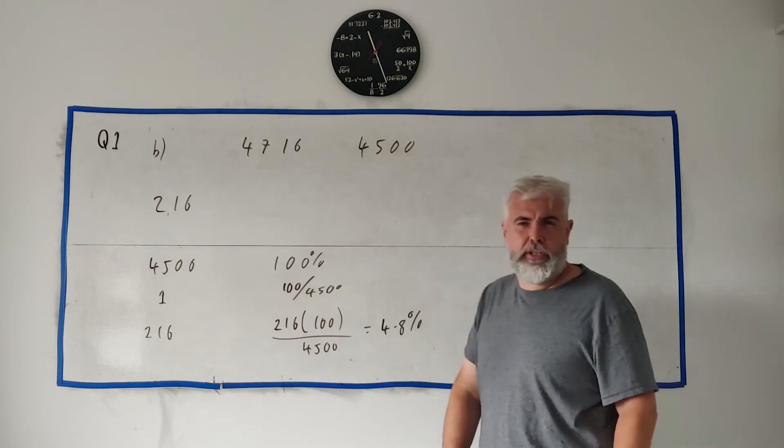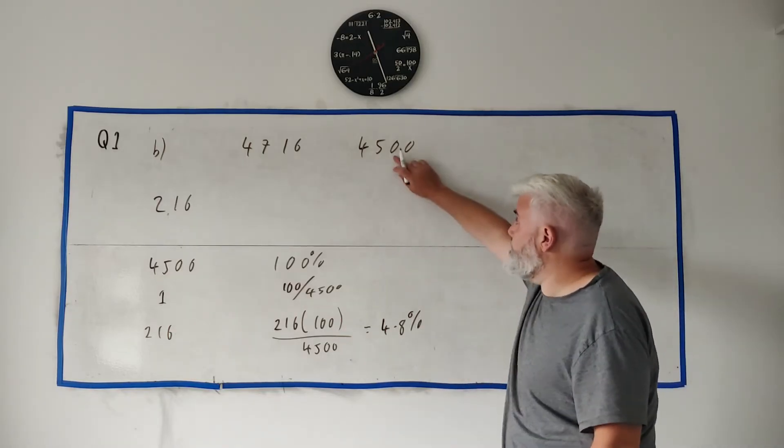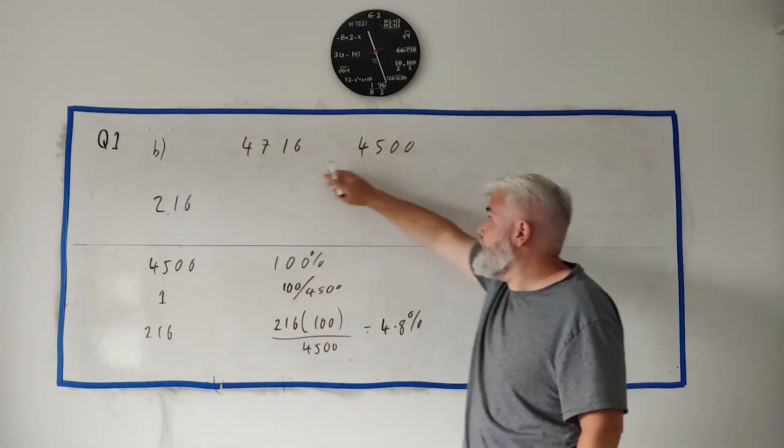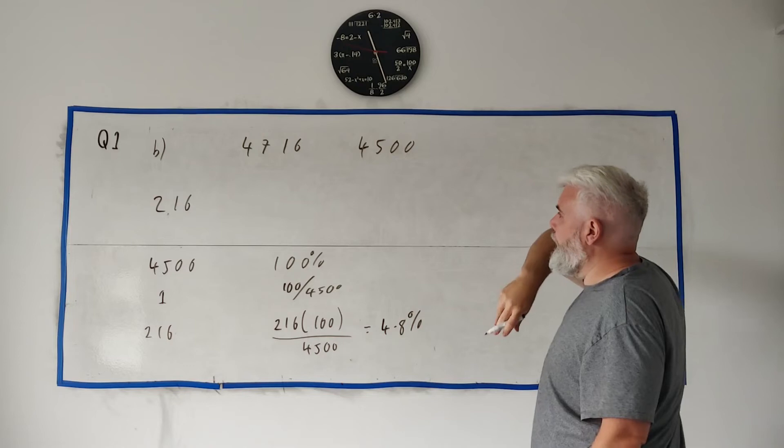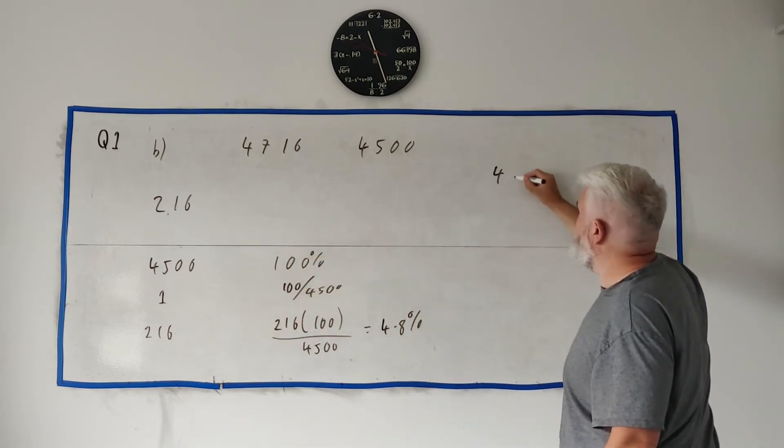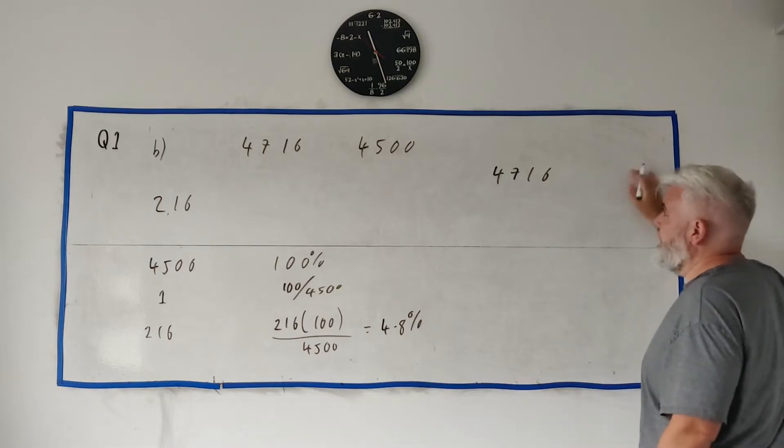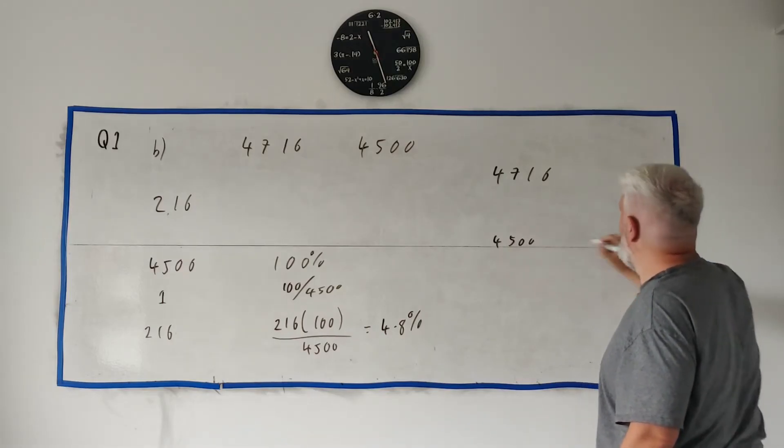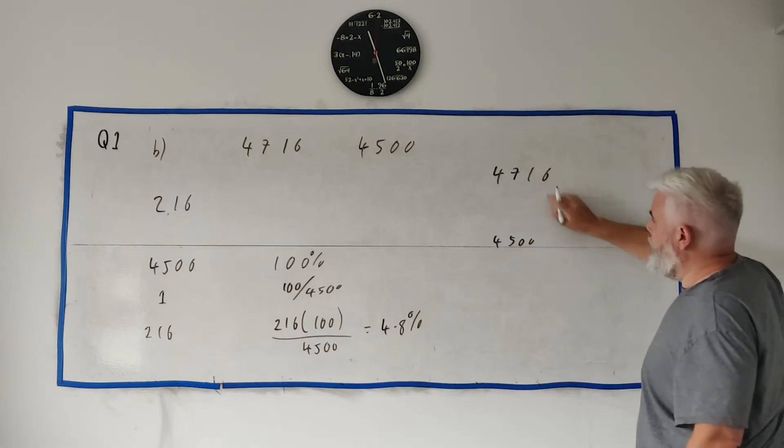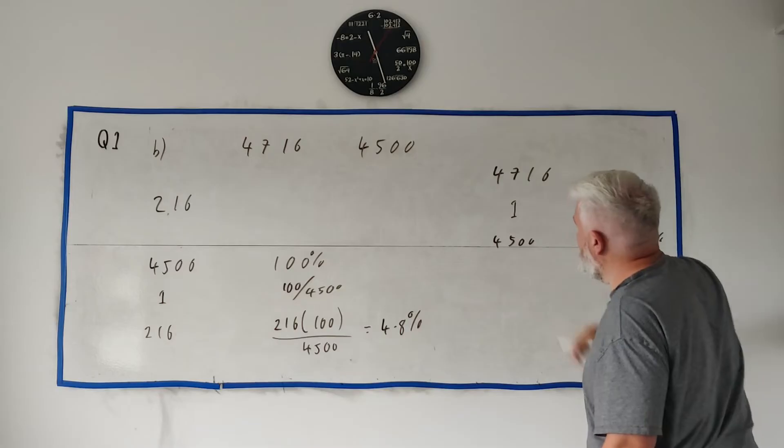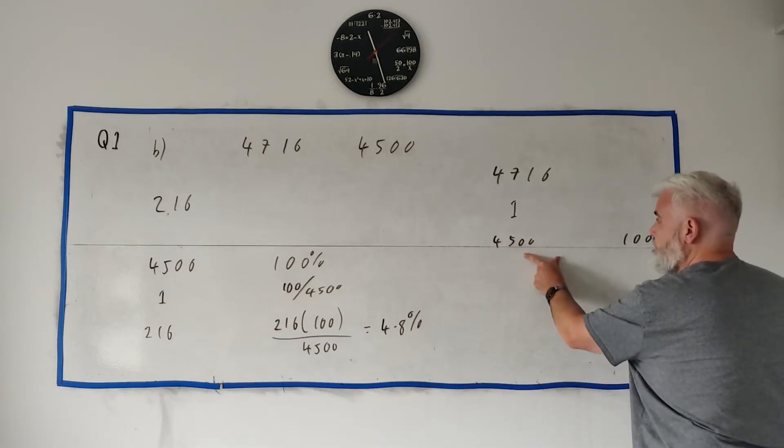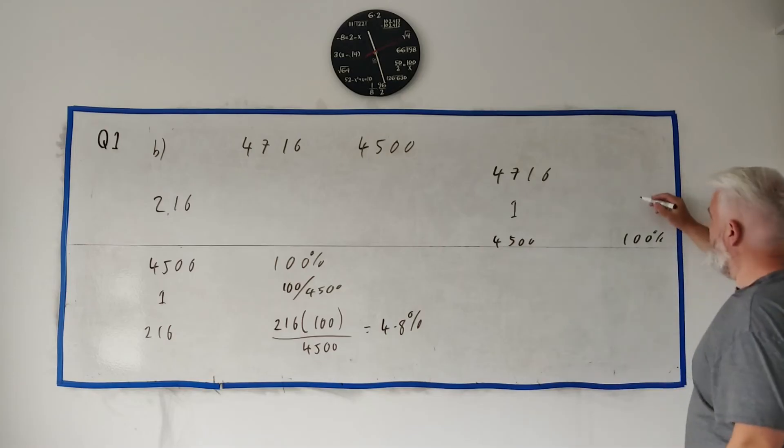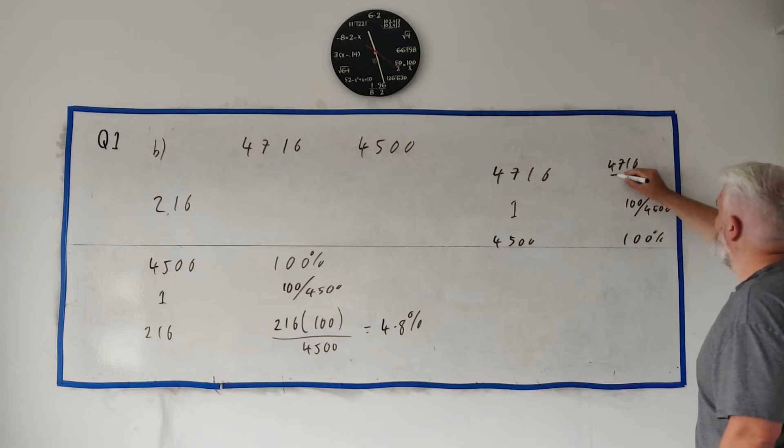I'll just show you a different way you could have done that. The starting price was here and this is the final price. You could have also done this: 4,716 was something percent, 4,500 was 100 percent. What percent was up here? So again we go through 1 and divide this by 4,500 we get 1, multiply by that.